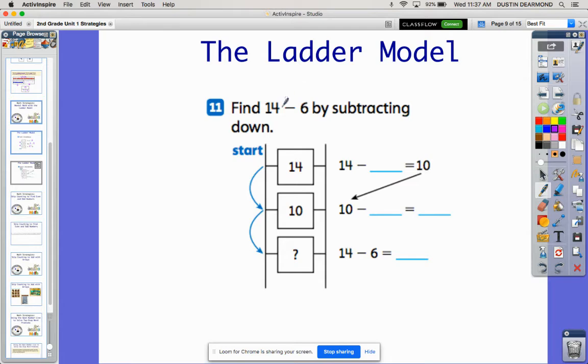This one is subtraction. We're starting at fourteen and taking away six. We're trying to make a ten in our mind, so I know I can just take away that four and that'll get me to ten. In the diagram, I'm jumping backwards four, taking away the four. If we think about our place value, we're taking away the ones to get to the ten.